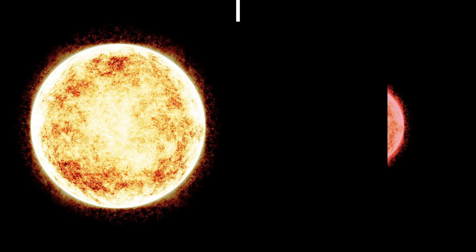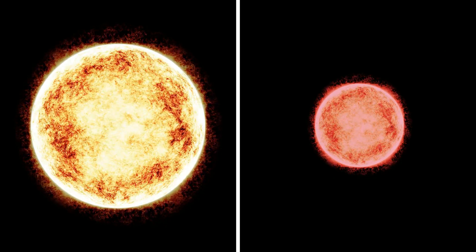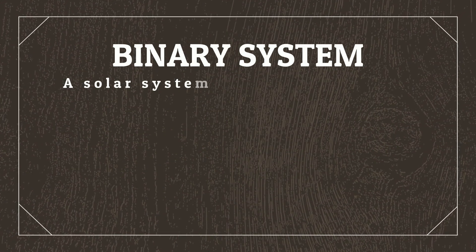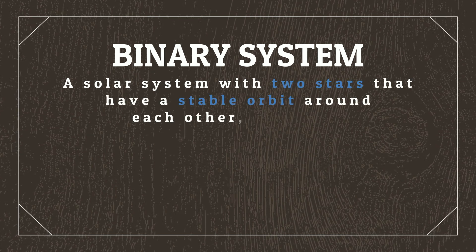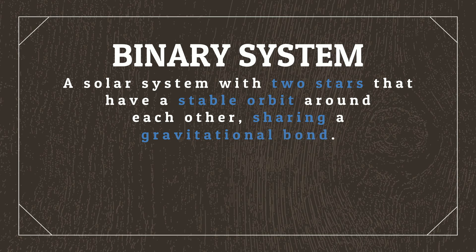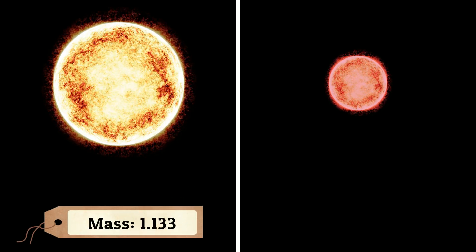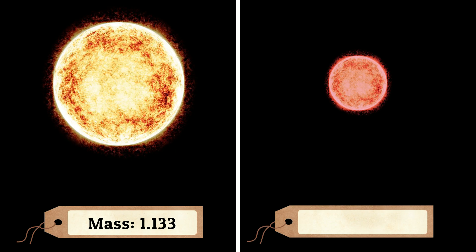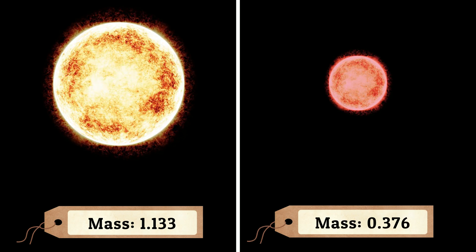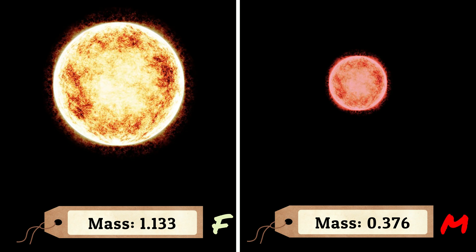Let's say that the solar system that Locus is picked up by has two stars that form a very close binary system, one much bigger than the other. A binary system refers to a solar system with two stars that have a stable orbit around each other, sharing a gravitational bond. Together, they're going to determine how much light and heat is output into the solar system, as well as where the habitable zone lies. Let's make one slightly bigger than our real-life Sun, with a mass of 1.133, and another that is smaller, with a mass of 0.376 — making them class F and class M stars respectively.